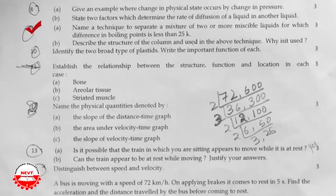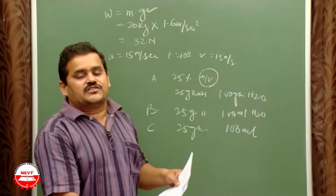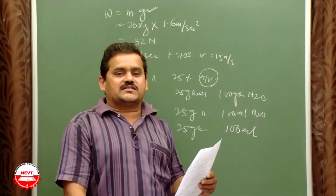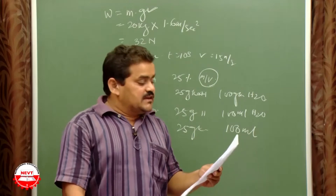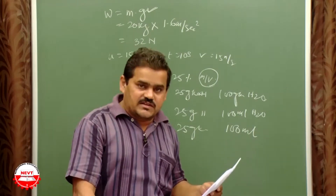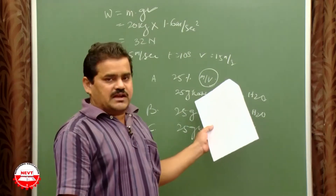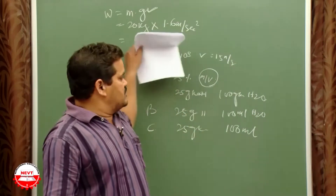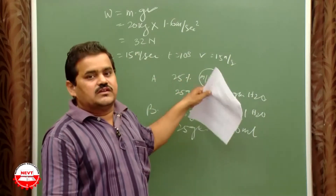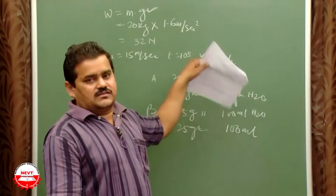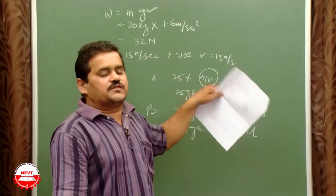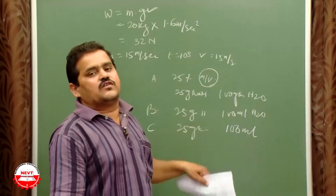Question number nine: Name a technique to separate a mixture of two or more miscible liquids for which the difference in boiling point is less than 25 K. The technique is fractional distillation. A fractionating tower is used with glass beads, through which hot gaseous substances pass and gradually condense in different layers.